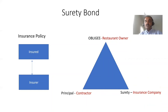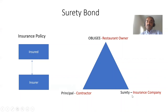The surety is nothing but the insurance company, and they make a payment based on the premium they get from the principal. The goal is not to have any loss because the principal is expected to complete his work on time — but for unforeseen reasons, if they don't, the surety comes into play. The core difference is insurance is a two-party contract, while surety bond is a three-party contract. I hope you like my training videos — do subscribe to my YouTube channel. Have a great day, bye-bye.